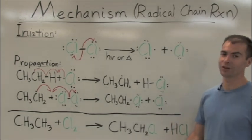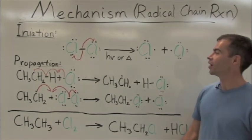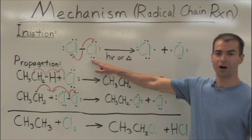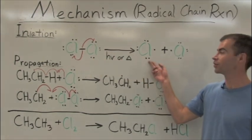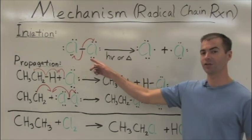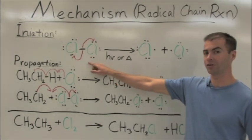We look first at the stages of initiation and propagation. In initiation, a chlorine molecule undergoes homolytic cleavage to yield two chlorine radical atoms. In homolytic cleavage, the sigma bond is broken and one electron goes to each chlorine fragment.